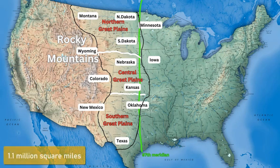This large area of land was purchased through the Louisiana Purchase of 1803 and includes about 1.1 million square miles — about a third of the United States. The states include Montana, the Dakotas, Minnesota, Kansas, Oklahoma, Texas, New Mexico, Nebraska, Colorado, and Wyoming. These central states were pivotal in how the Dust Bowl actually occurred.